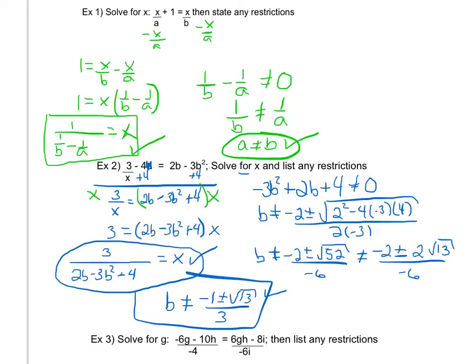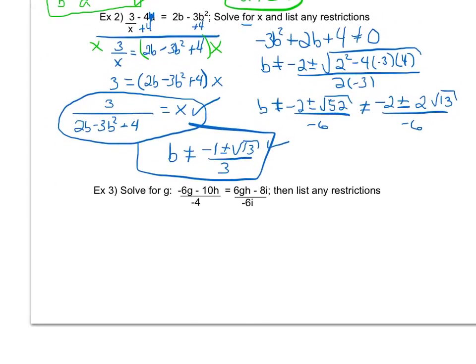Looking at one final example, I'm asked to solve for the letter g here. I see I have much more going on in this one than I have in the previous ones. But the first thing I notice is I have fraction equal to a fraction. I also notice that I have a g here and here so I would like my g's, since that's a variable I'm trying to find, to be on the same side. However, I cannot move either of them without getting rid of the fraction first. So I'm going to go ahead and start by cross multiplying. So I'm going to have negative 6i times the entire top, I show it's by the entire top by using parentheses, equals negative 4 times 6gh minus 8i.